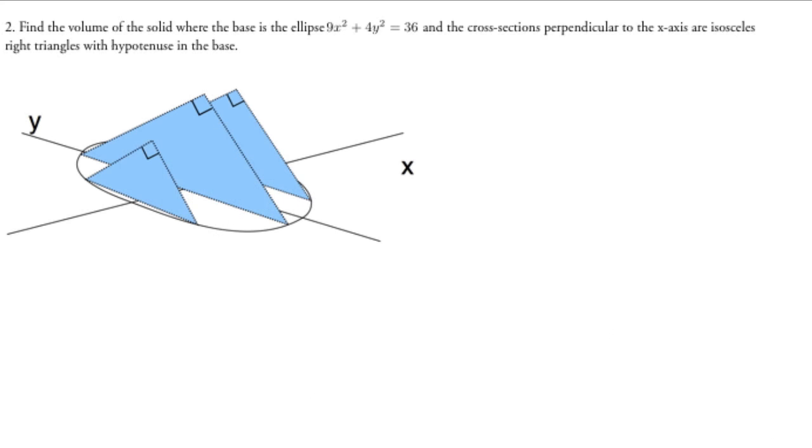Here we have a volume of the solid where the base is the ellipse 9x² + 4y² = 36, and the cross sections perpendicular to the x-axis are isosceles right triangles with a hypotenuse in the base. Since they're isosceles triangles, that means that this side right here is going to equal to this side right here.